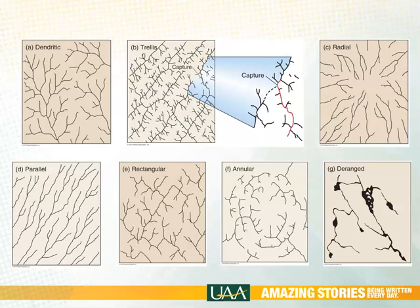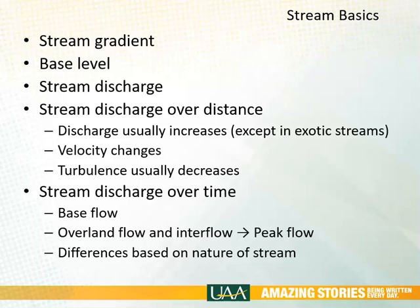Streams are said to have a gradient, which refers to how steep they are. That can change over time and over distance, but ultimately streams are flowing from the height of land down to what's called the base level of the stream, which could be a lake or an ocean, or in the case of exotic streams — streams that occur in desert areas — just the open desert where they evaporate.